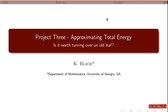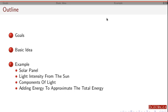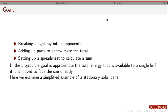We're going to do a quick overview for the third project. We'll look at the basic idea for the project, do a quick example, and then look at how to set up a spreadsheet. After this video, you should be able to take a light ray, break it up into components, find the energy over a given time period, and add up the energy over each time period to make an approximation for the total energy.